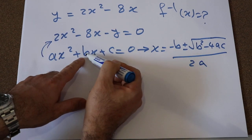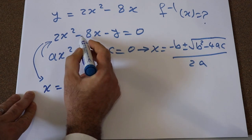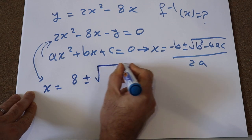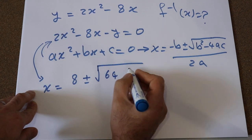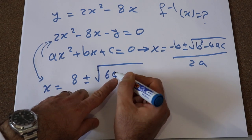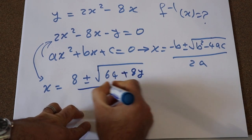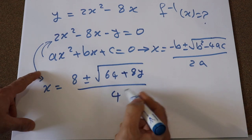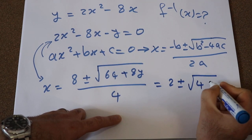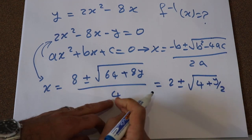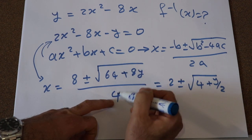Comparing, a equals 2, b equals minus 8, and c equals minus y. Therefore, x equals [minus(minus 8) ± √((minus 8)² minus 4 times 2 times (minus y))] divided by (2 times 2), which is [8 ± √(64 plus 8y)] divided by 4. Simplifying: 8 divided by 4 is 2, and bringing 4 inside the square root gives √(4 plus y) after dividing 64 by 16 to get 4 and 8y by 16 to get y/2. The simplified result is x equals 2 ± √(4 plus y) divided by... [simplified form].